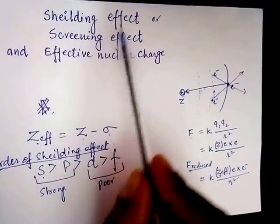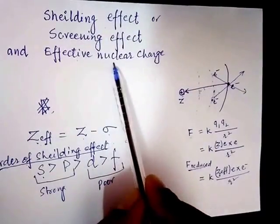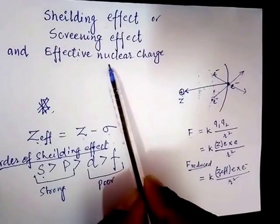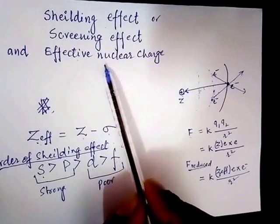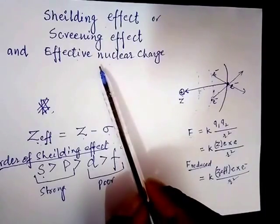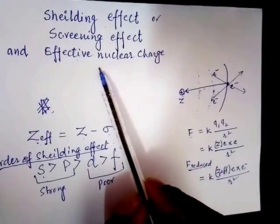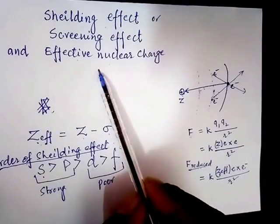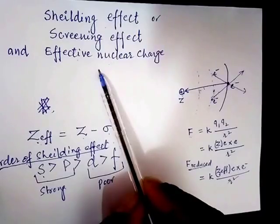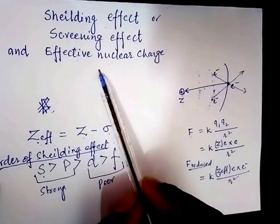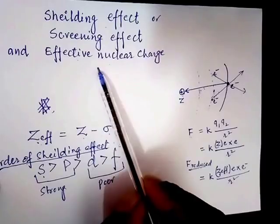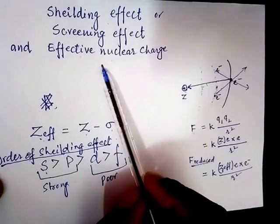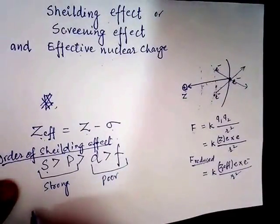These terms — shielding effect, screening effect, and effective nuclear charge — are very useful. They are used to explain the new trends in the periodic table, such as the change in atomic size across a period, the increase in ionization enthalpy across a period, and the increase in size going down a group. One more important related term is penetrating power.